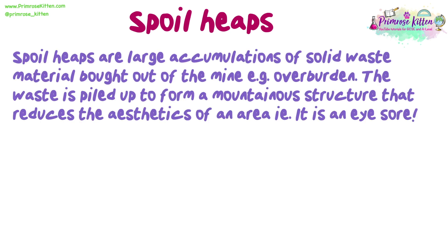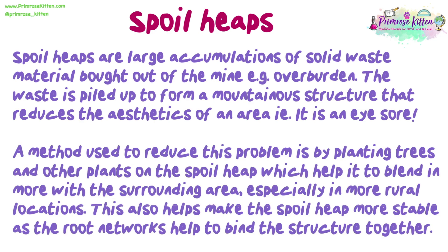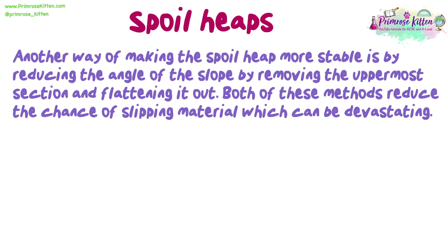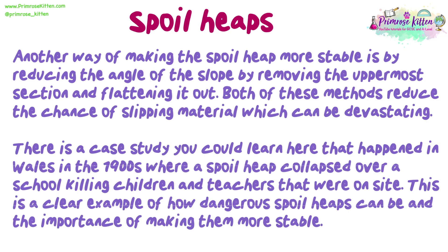Spoil heaps. Spoil heaps are large accumulations of solid waste material brought out of the mine, like overburden. The waste is piled up to form a mountainous structure that reduces the aesthetics of an area — it's an eyesore. A method used to reduce this problem is by planting trees and other plants on the spoil heap, which helps blend it in with the surrounding area, especially in rural locations. This also makes the spoil heap more stable as root networks help bind the structure together. Another way to increase stability is by reducing the angle of the slope by removing the uppermost section and flattening it out. Both methods reduce the chance of slipping material, which can be devastating — there is a case study from Wales in the 1900s where a spoil heap collapsed over a school, killing children and teachers on site.